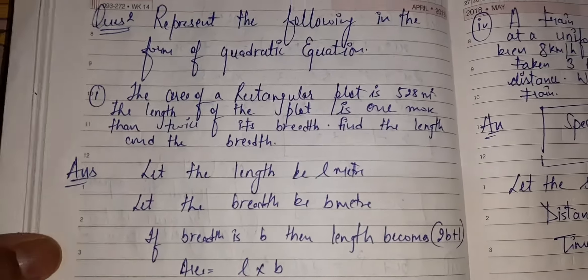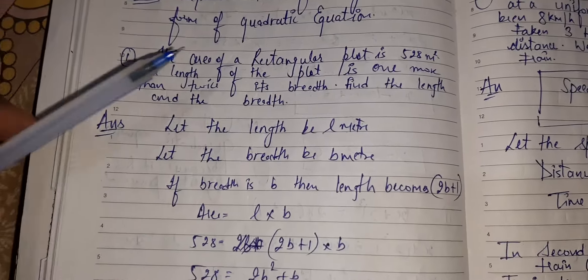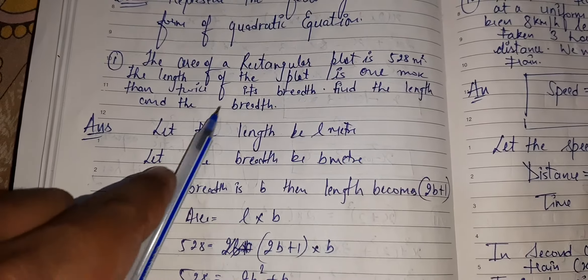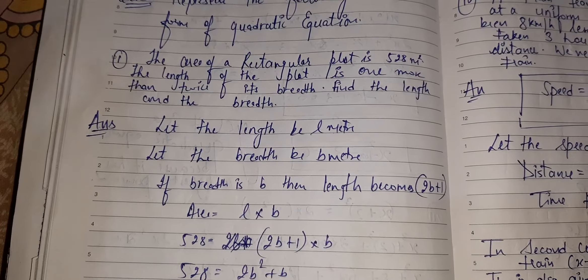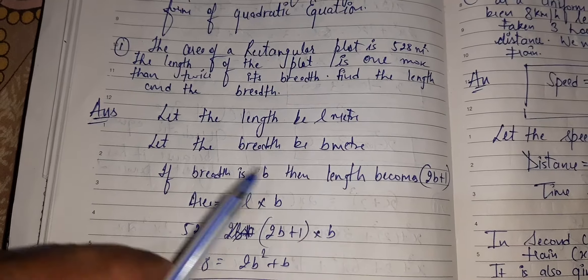Now, question number 2 says, represent the following in the form of quadratic equation. The area of a rectangle plot is 528 meter square. The length of the plot is 1 more than twice its breadth. Find the length and breadth.